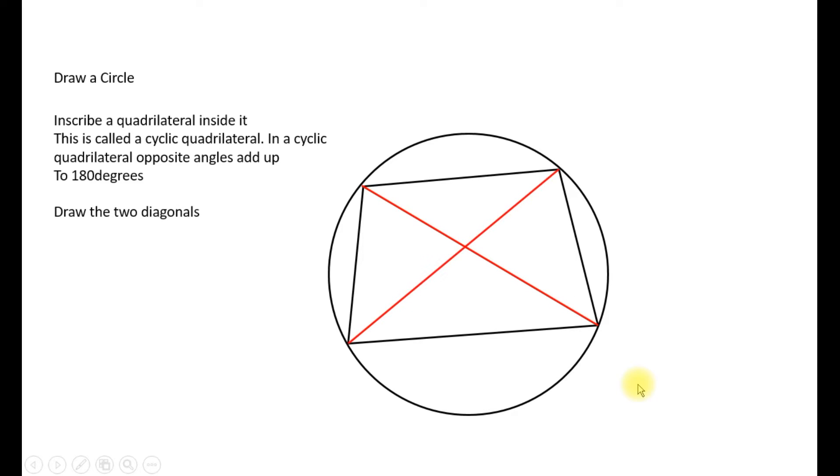Now we draw the diagonals and we label the vertices. Ptolemy's theorem states the following equation which means that the product of the two diagonals which we see on the right hand side here is equal to the sum of the products of the two opposite sides: AB times DC plus AD times BC.